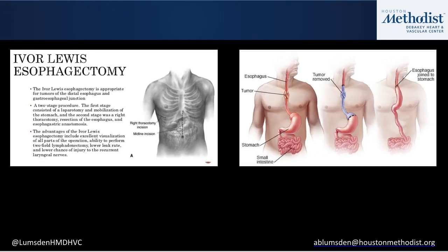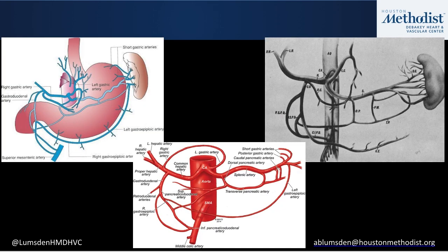This is the operation that had been performed, done partly robotically, where the proximal stomach was resected along with the distal esophagus, and the mobilized stomach was pulled up into the chest to create the anastomosis. Anatomically, the reconstruction is based upon the right gastric and the right gastroepiploic artery. The right gastroepiploic artery is one of the terminal branches of the gastroduodenal artery.